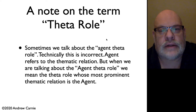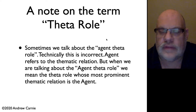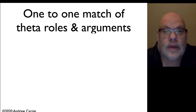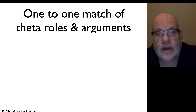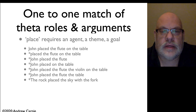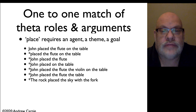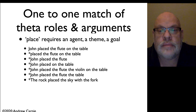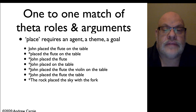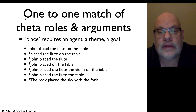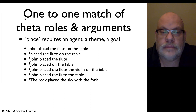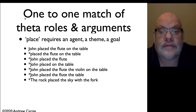There's a critical one-to-one matching of theta roles and arguments — the number of theta roles must match the number of arguments. Take for example the verb place. Place requires three arguments: an agent, a theme, and a goal. So you have the sentence: John placed the flute on the table. John is the agent, the flute is the theme, and on the table is the goal. If you leave any of these off, you get an ungrammatical sentence. Placing the flute on the table without John leaves off the agent; John placed the flute leaves off the goal; John placed on the table leaves off the theme.